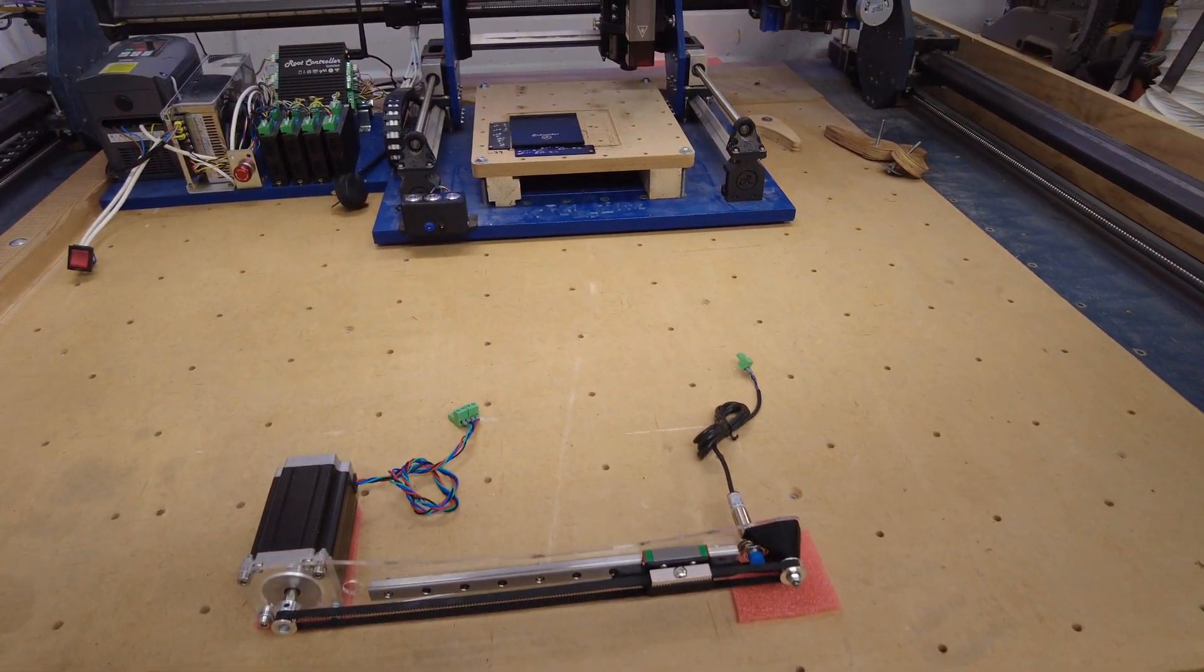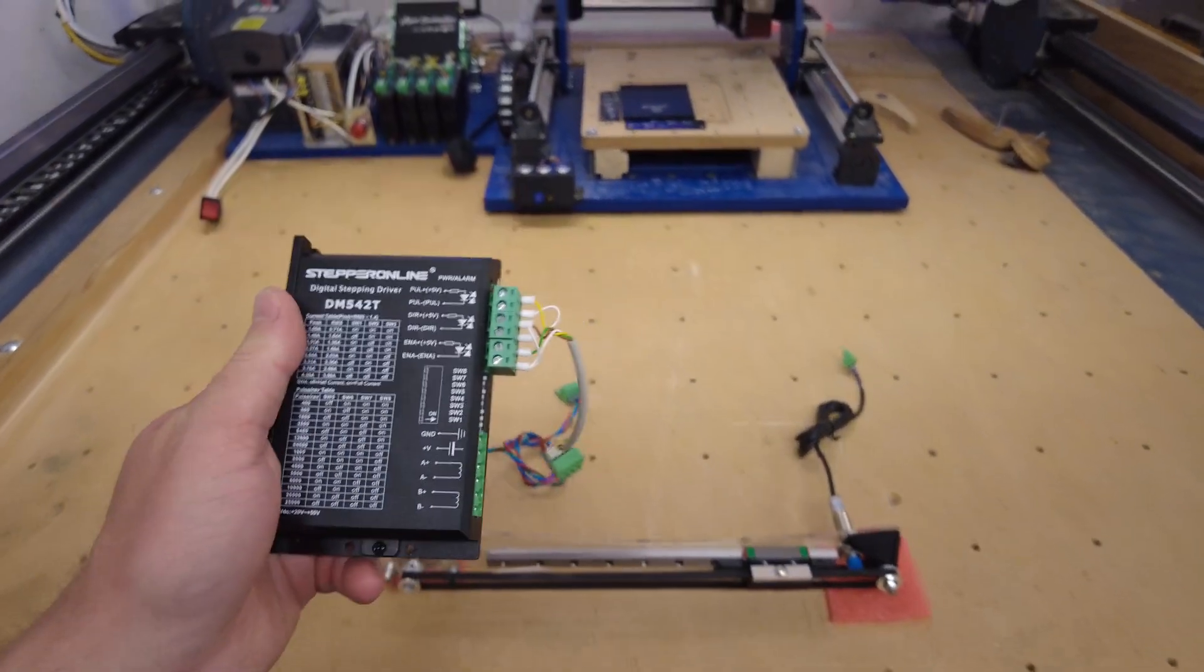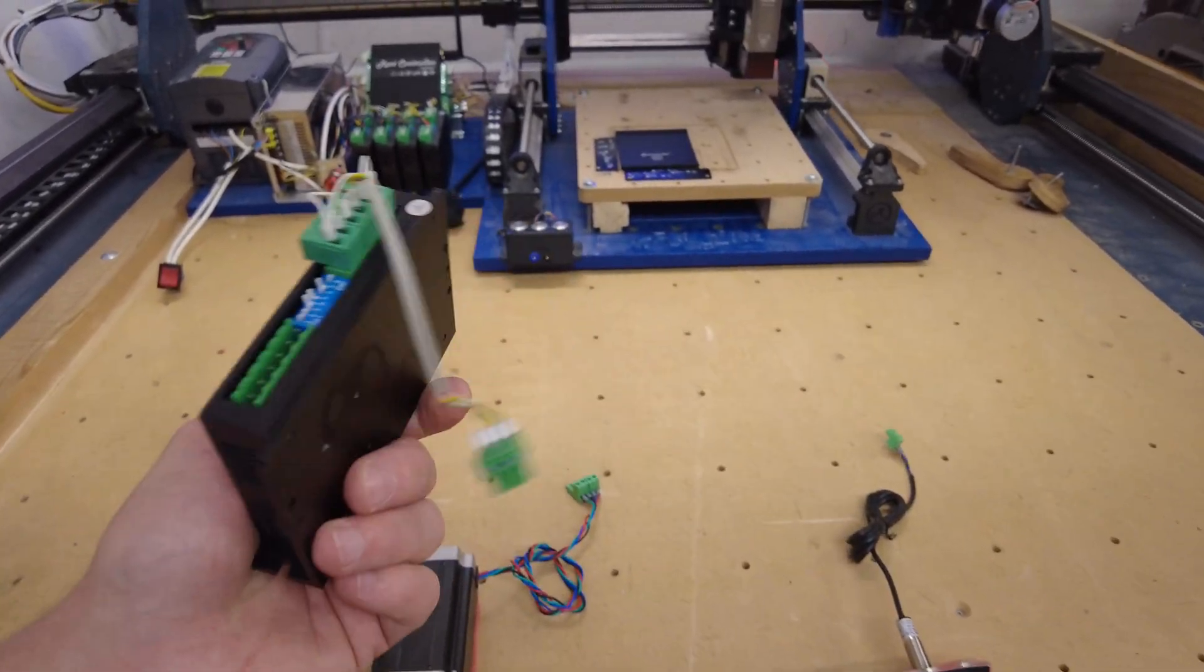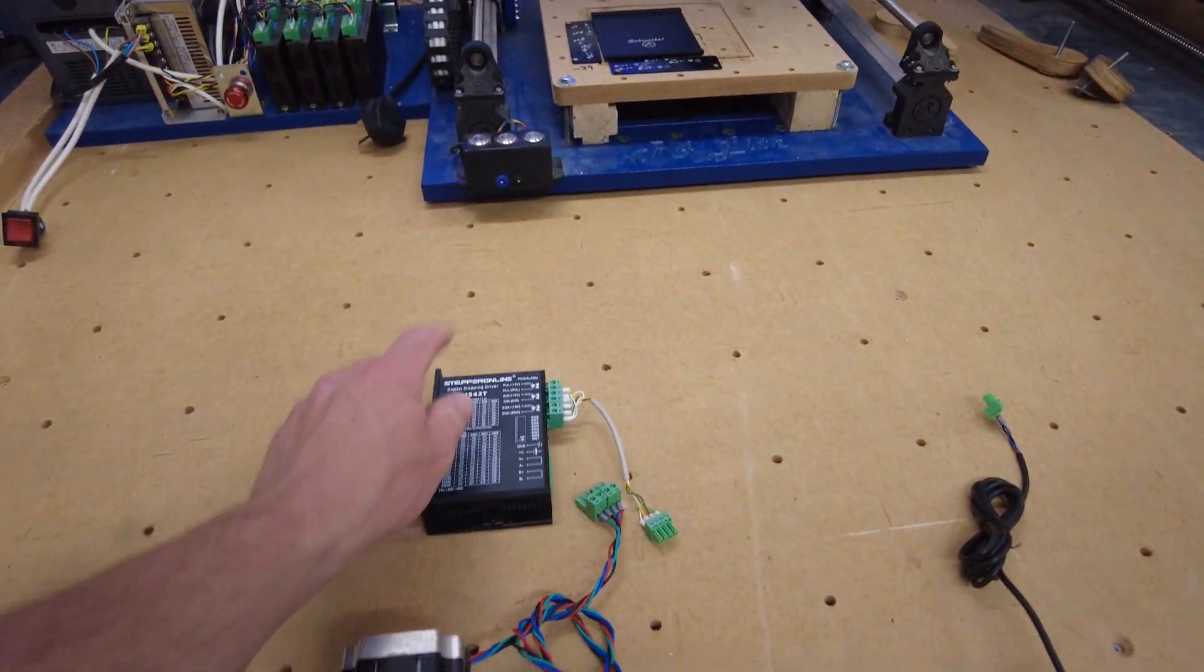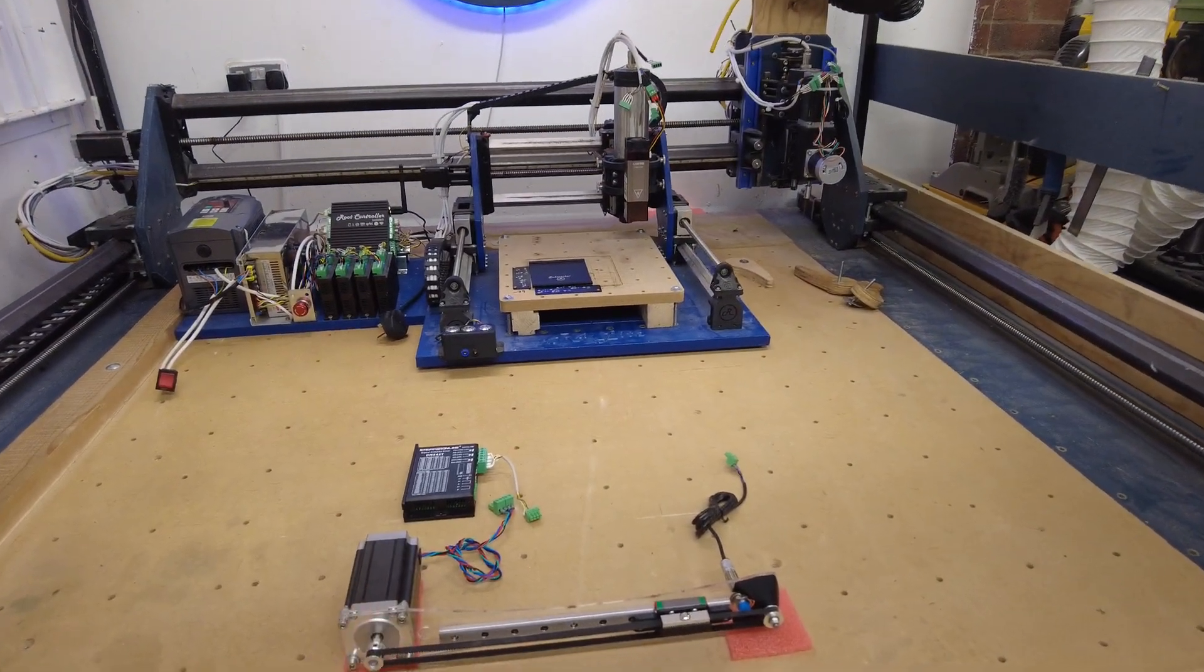The next part of the puzzle is the stepper motor driver. In this case we're using the DM542T. These things are brilliant - I'm using this driver on my Route 4 Light in the background and my large Route 4. They're top quality and just work, super simple.